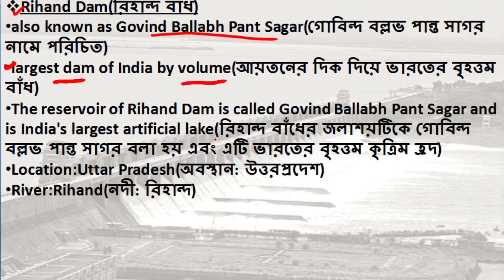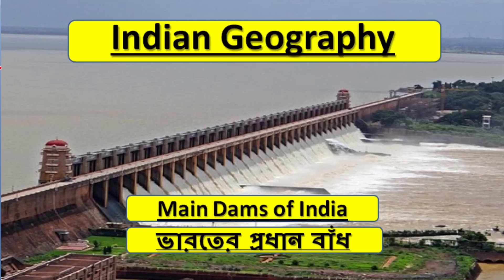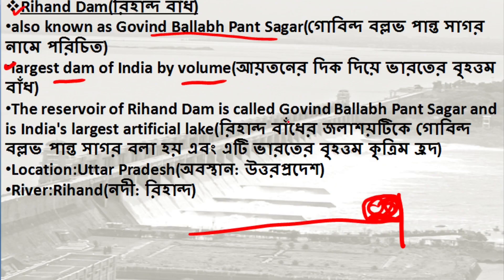Govind Ballabh Pant Sagar is India's largest artificial lake. This is a very interesting topic — you can see the reservoir in the description. Behind the dam, the water is stored, and the reservoir formed is called an artificial lake.